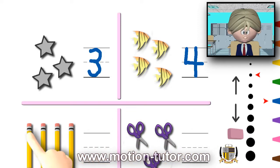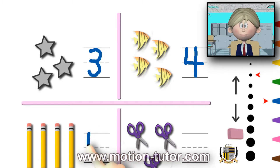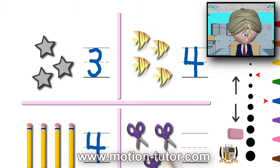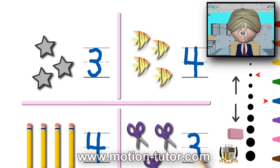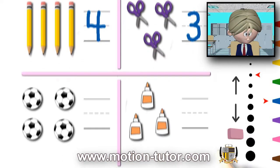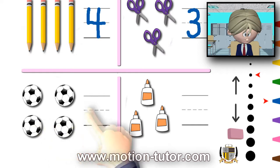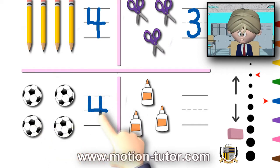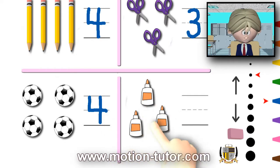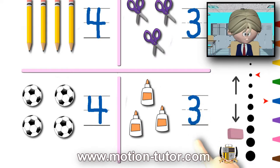How many pencils do you see? One, two, three, four. So, remember number four — down, over, and cross. How many scissors do you see? One, two, three — write the number three. How many soccer balls do you see? One, two, three, four — writing the number four. And finally, how many bottles of glue do you see? One, two, three. There we go.